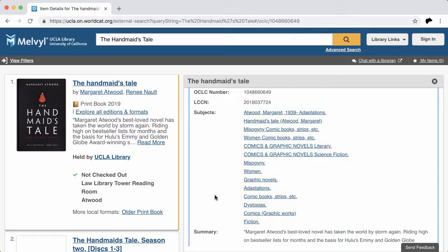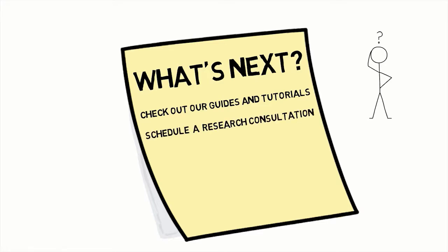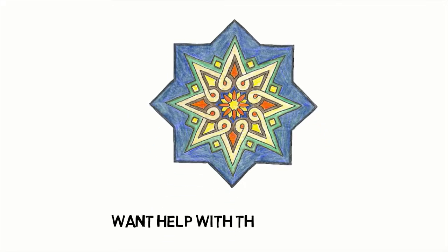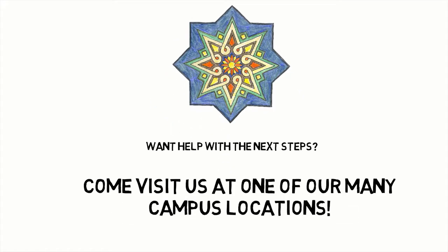Don't forget, if you need help you can always ask a librarian. Just check out the 24/7 Librarian widget. Check out our guides and tutorials on the library website under the Research and Teaching Support section for help with a variety of topics, including searching in the UCLA Library Catalog. Schedule a research consultation, or drop by one of our libraries for help with research. Come visit us at one of our many campus locations.